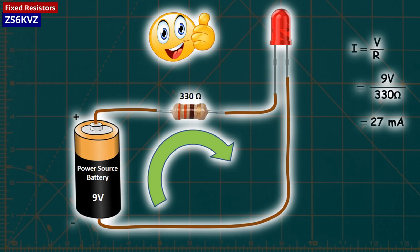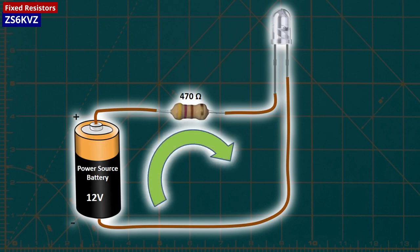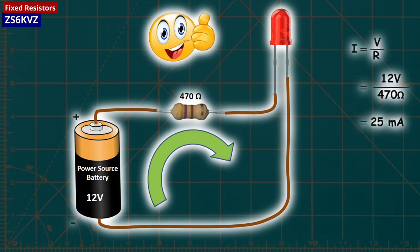If we want to use the same LED with a 12V voltage source, we should use a higher resistor, such as a 470 ohms resistor. In this case, a current of approximately 25 milliampers will flow through the circuit, and the LED will remain illuminated for a long time without damage.